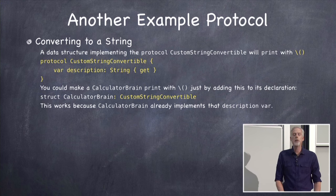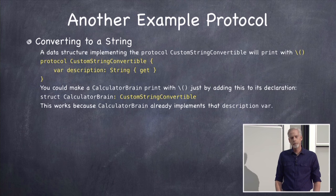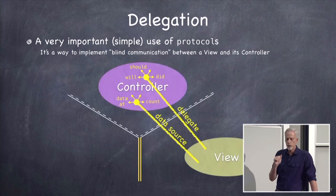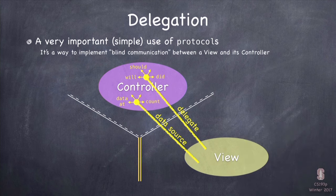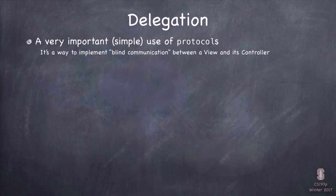Another really simple use of protocols is delegation — that's really where we've been leading up to in terms of a use case for protocols. Delegation is how we implement the MVC blind structured communication — the delegate and the data source. It does use Objective-C protocols because there are many optional methods. This is how we'll implement the 'will, should, and did' communication pattern between views and controllers that I discussed back in lecture two.